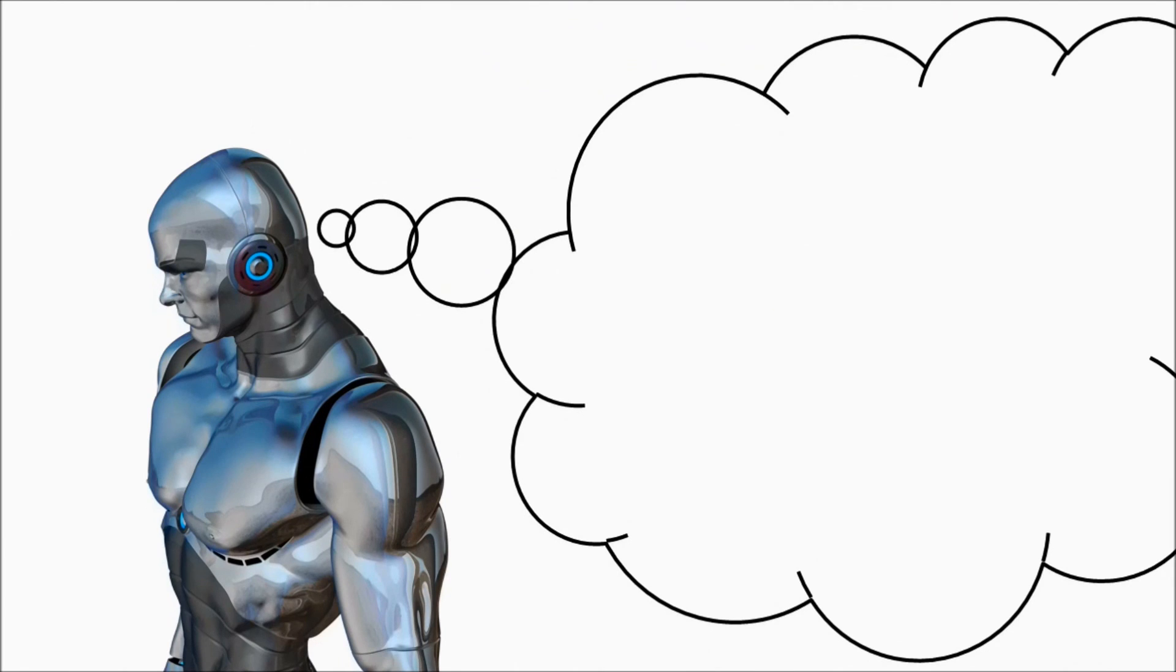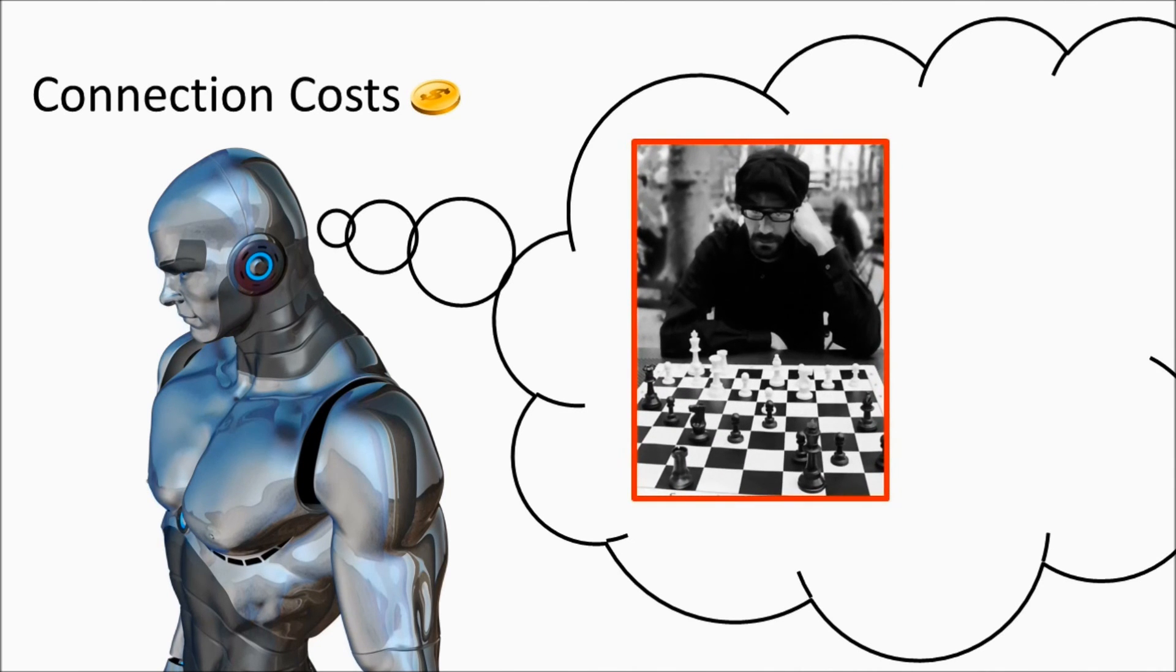Our research shows that evolving neural networks with a connection cost produces more modular networks that can better learn multiple skills without catastrophic forgetting.